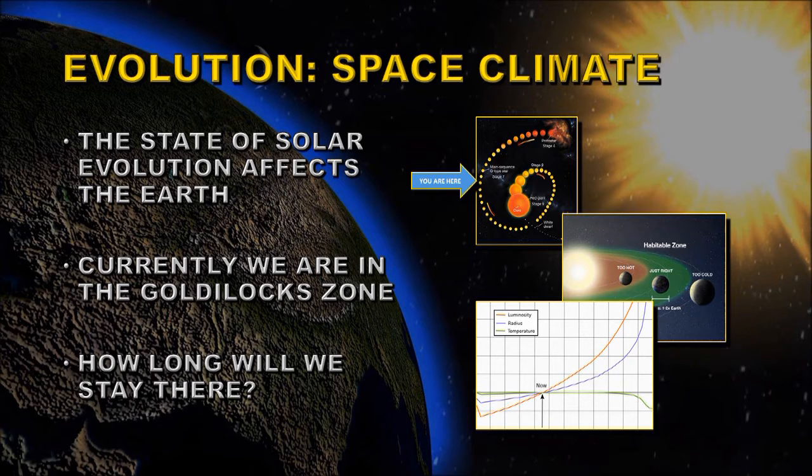This graph shows the evolution of some of the Sun's major parameters. The red curve shows the Sun's luminosity is increasing steadily. In about a billion years time, the luminosity will have increased sufficiently that the Earth will have moved out of the Goldilocks Zone and become uninhabitable.